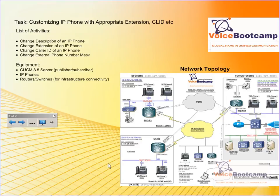Welcome to Voice Bootcamp. In this particular task, I'm going to show you how to customize a Cisco IP phone with appropriate caller ID. Here we're going to learn how to change the description of a phone, how to change the extension of a Cisco IP phone, how to change the caller ID and the differences between alerting name, ASCII alerting name, display internal caller ID, and which name will show up at what point. And then, of course, we're going to learn how to change the external phone number mask.